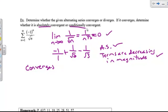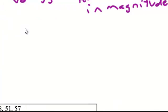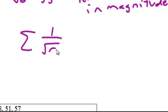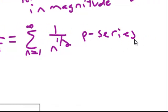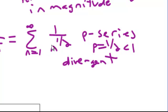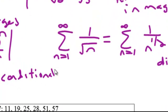Now we check absolute convergence. Taking the absolute value means every term is positive, so we look at the series 1 over the square root of n from 1 to infinity. This is a p-series with p equal to 1/2. Since p is less than 1, this is a divergent series without the alternating part. So the absolute value of the series diverges, making it a conditionally convergent series.